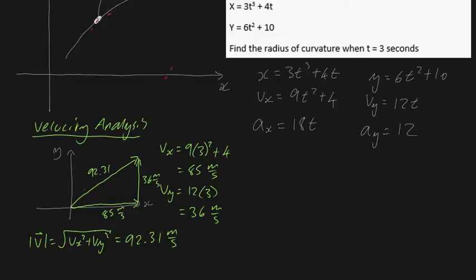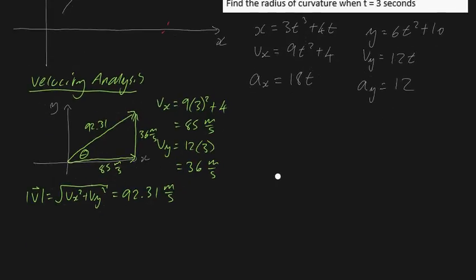We can also find angle theta using trigonometry. Theta equals the inverse tangent of opposite over adjacent, which is 36 over 85. Plugging that into the calculator gives theta equals 22.95 degrees. So now we have a full understanding of the velocity of our particle at 3 seconds.